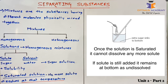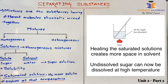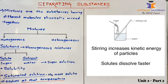You have two solutions for that. One, you can increase the temperature. As you increase the temperature, molecules will gain kinetic energy and they will move away from each other. As they move away from each other, there will be space available to accommodate more sugar particles, so the extra undissolved sugar particles will now be able to dissolve at the increased temperature. Two, you can stir the mixture. As you stir the mixture, the particles gain kinetic energy and make more space to accommodate particles inside the solution.